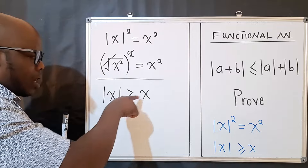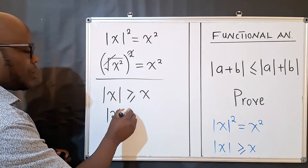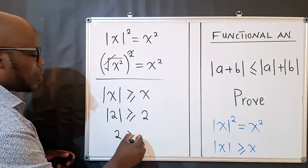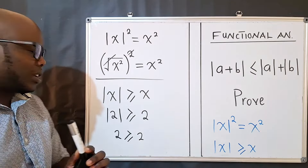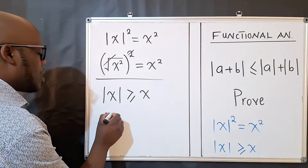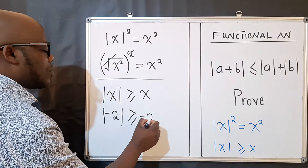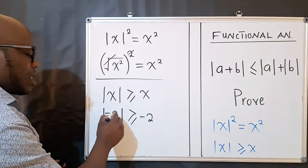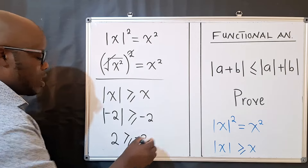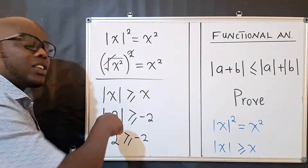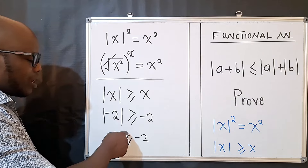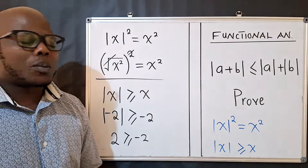For example, substitute 2: the absolute value of 2 equals 2, so we get 2 ≤ 2 — that holds. Now with a negative number like −2: the absolute value gives a positive 2, while the right-hand side is −2, so 2 ≥ −2. Whatever is inside the absolute value comes out positive, which is why the absolute value is always greater than or equal to the plain value.